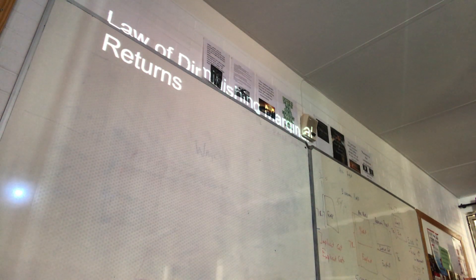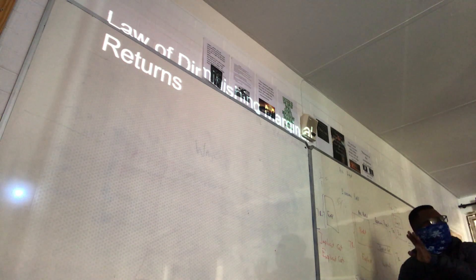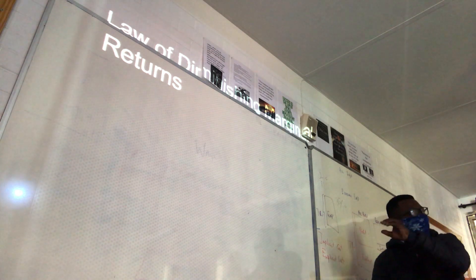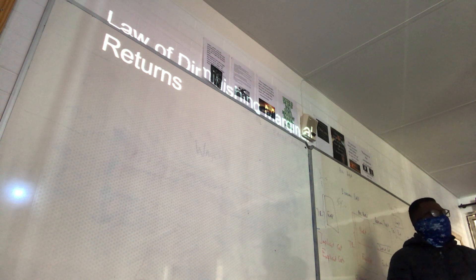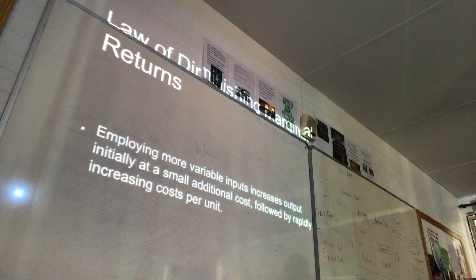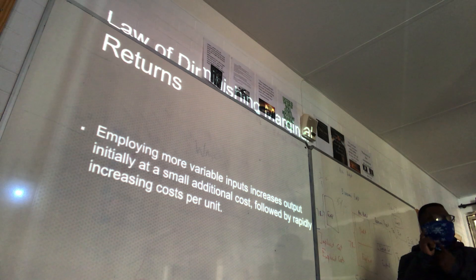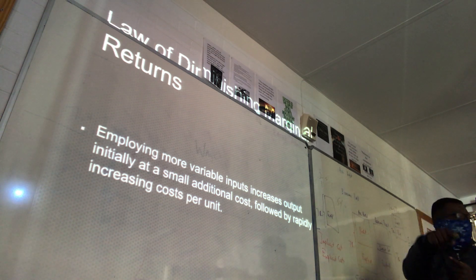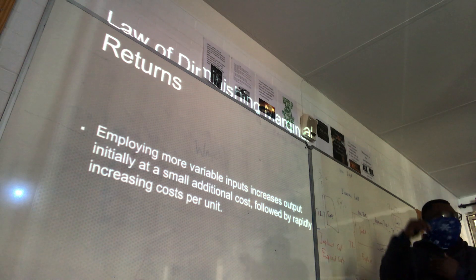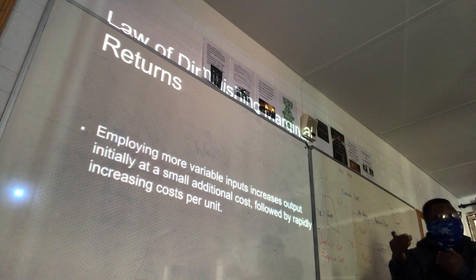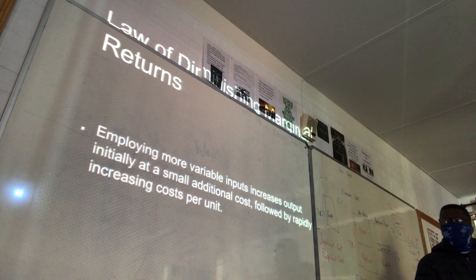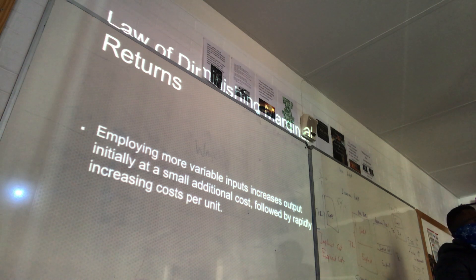The law of diminishing marginal returns: employing more variable inputs into the production process increases outputs, initially at a small additional cost, followed by rapidly increasing costs per unit. I'll explain it and then it should make sense.